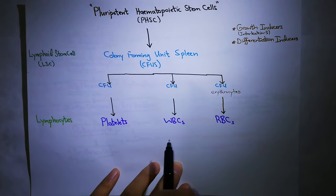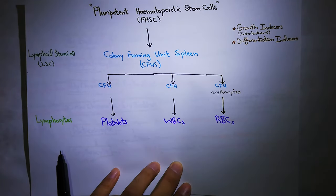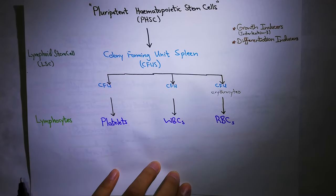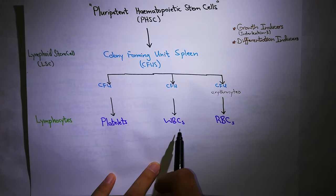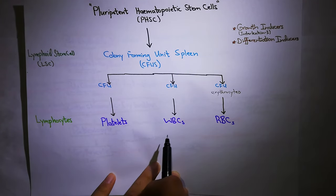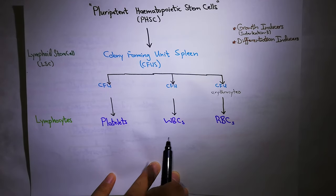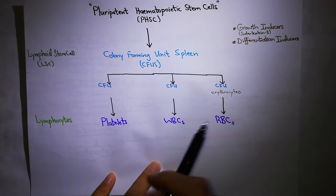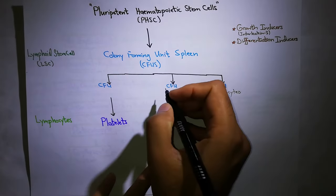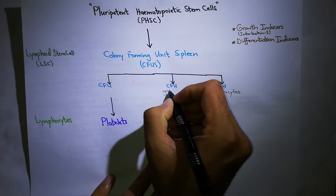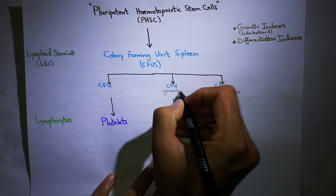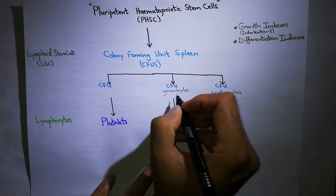The colony forming units are classified by their end products. Colony forming units for granulocytes and monocytes produce WBCs. WBCs are of two types: granular WBCs which are granulocytes, and another type which is monocytes. So colony forming unit granulocytes and monocytes give rise to these WBCs.